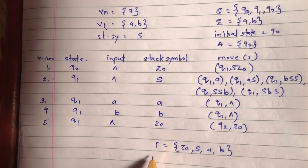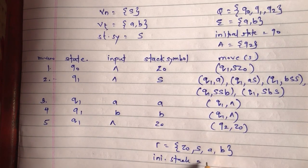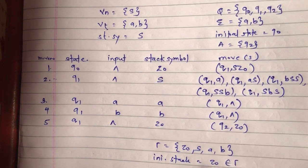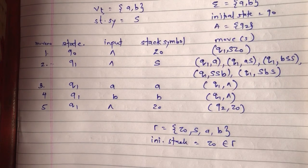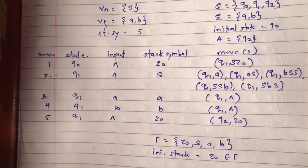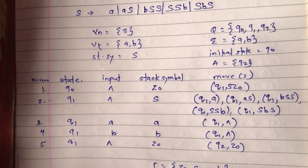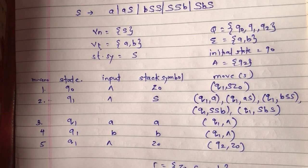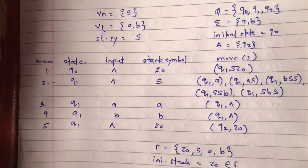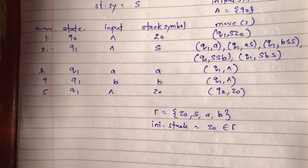The stack alphabet tow contains Z0, all terminal symbols, and all non-terminal symbols: S, A, and B. The initial stack symbol is Z0, which belongs to tow. This is how we have constructed the seven-tuple of PDA: capital Q, alphabet, Q0, A, delta, tow, and Z0.